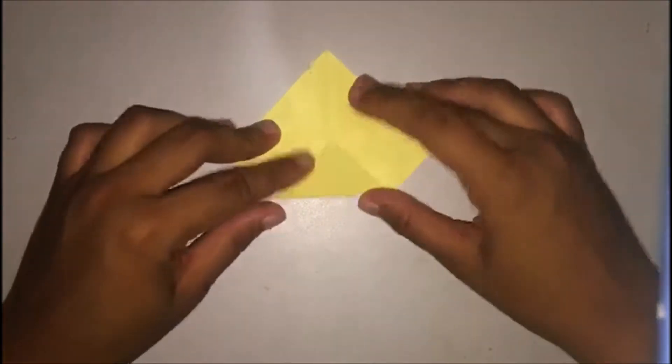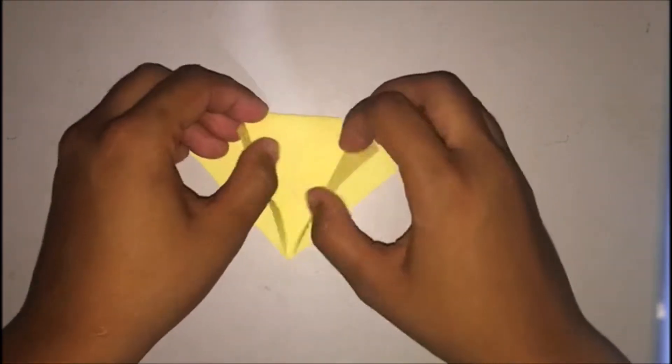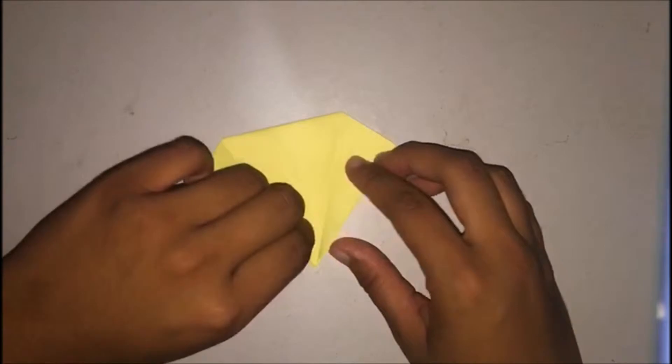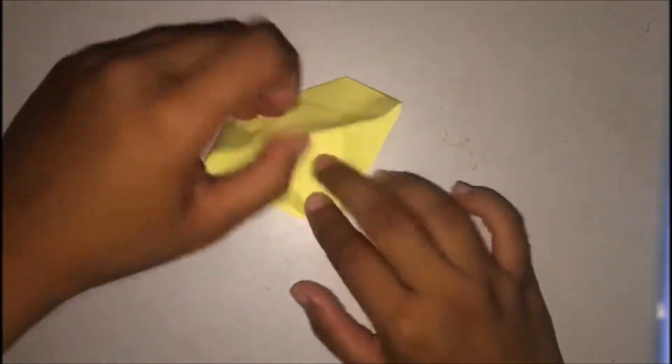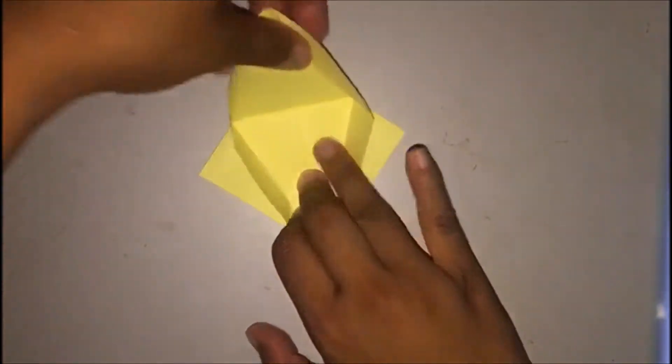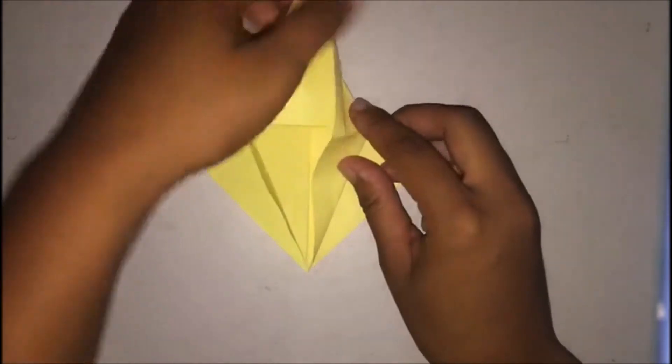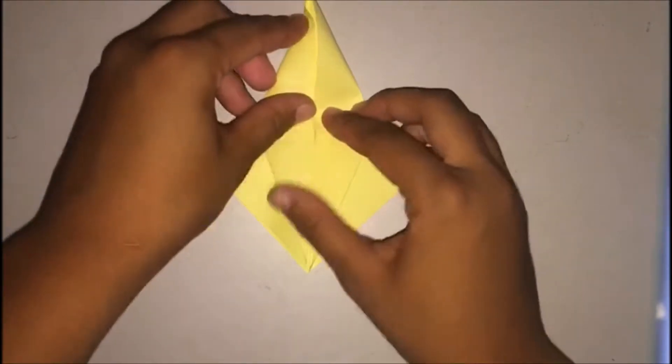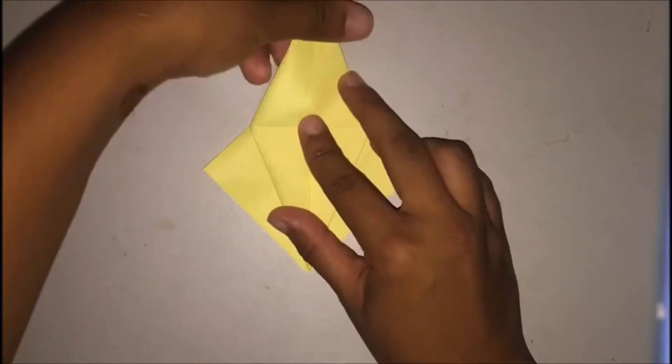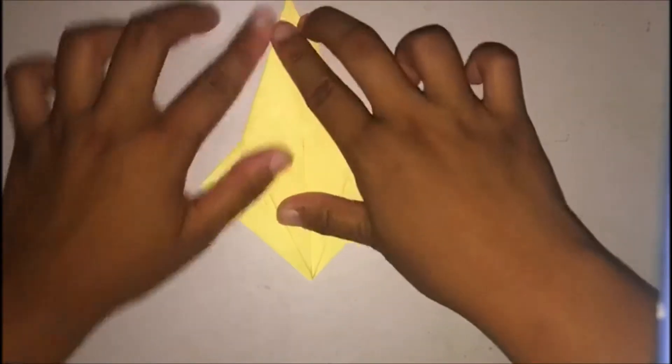Now that you've done that, flip it over. Open the flaps that you just folded earlier. Then open it up again. And from this point, you're going to open it all the way over. The creases that you just made from folding the flaps in, you can use those to help you make the shape.